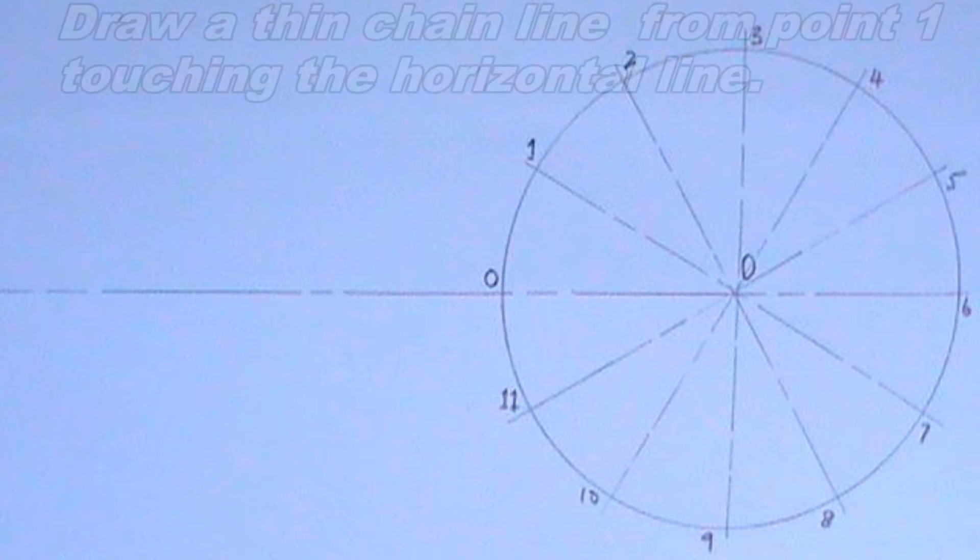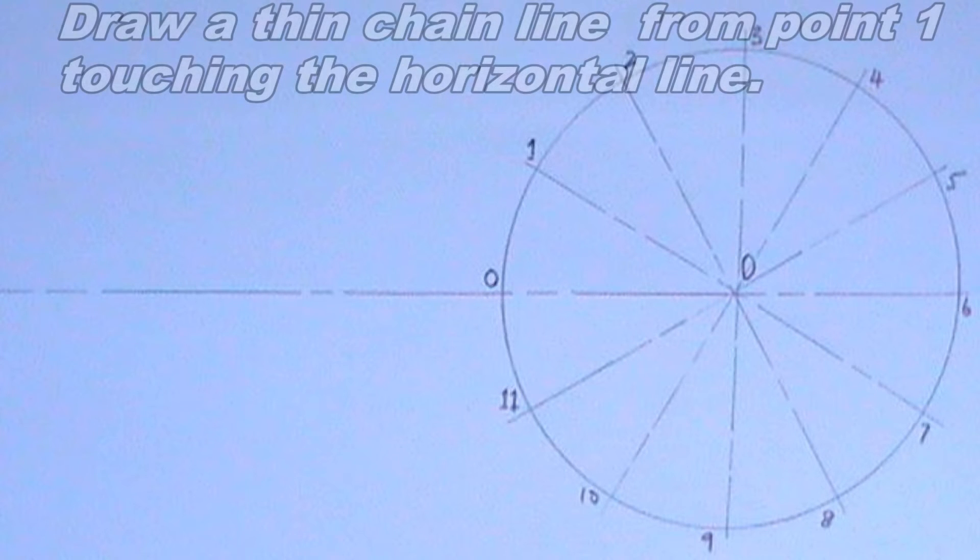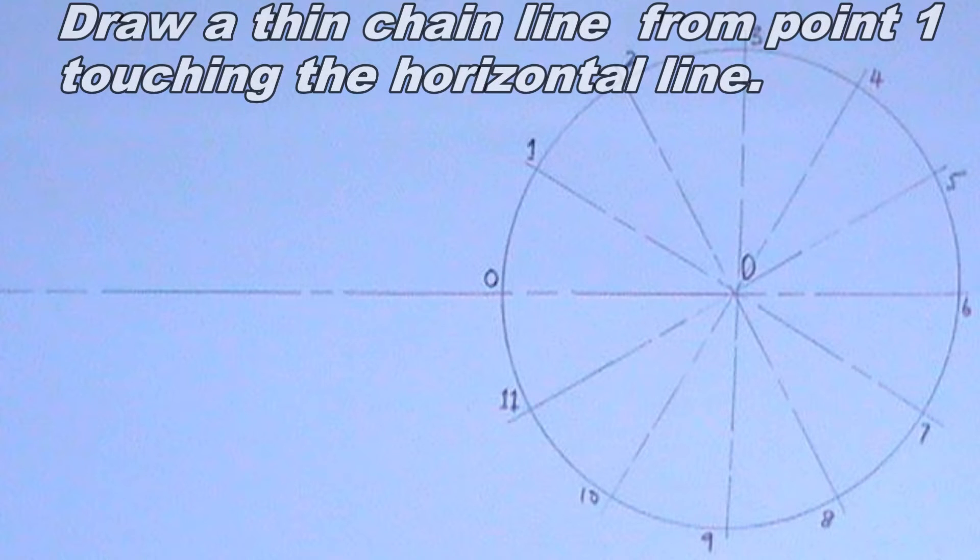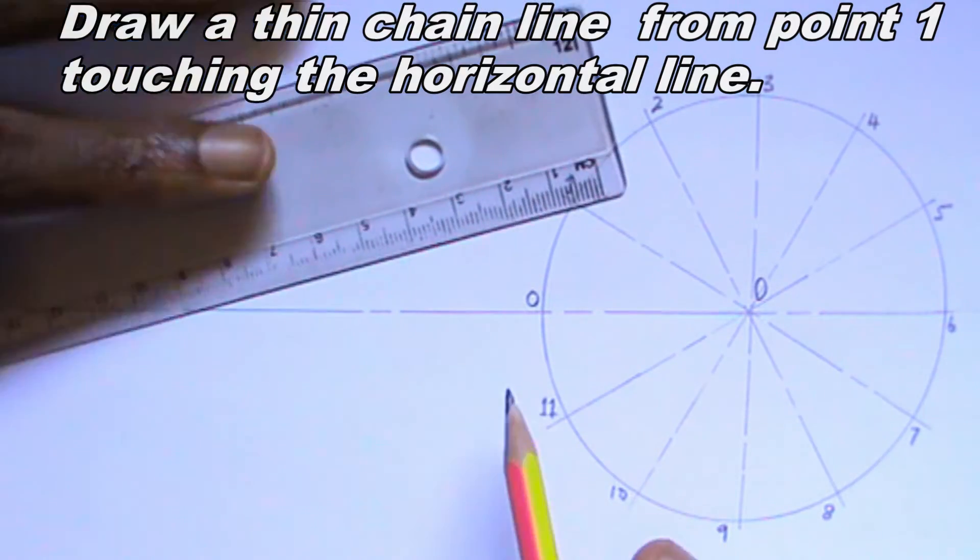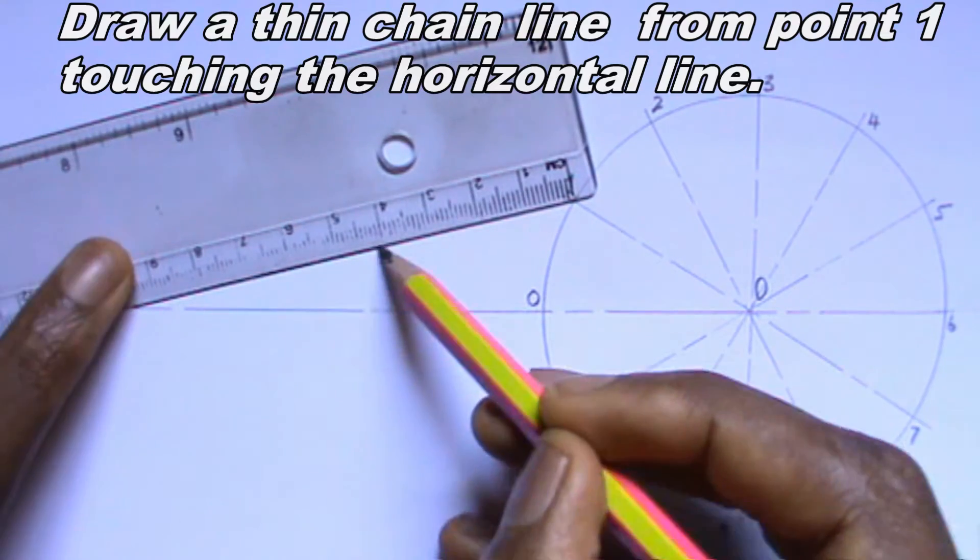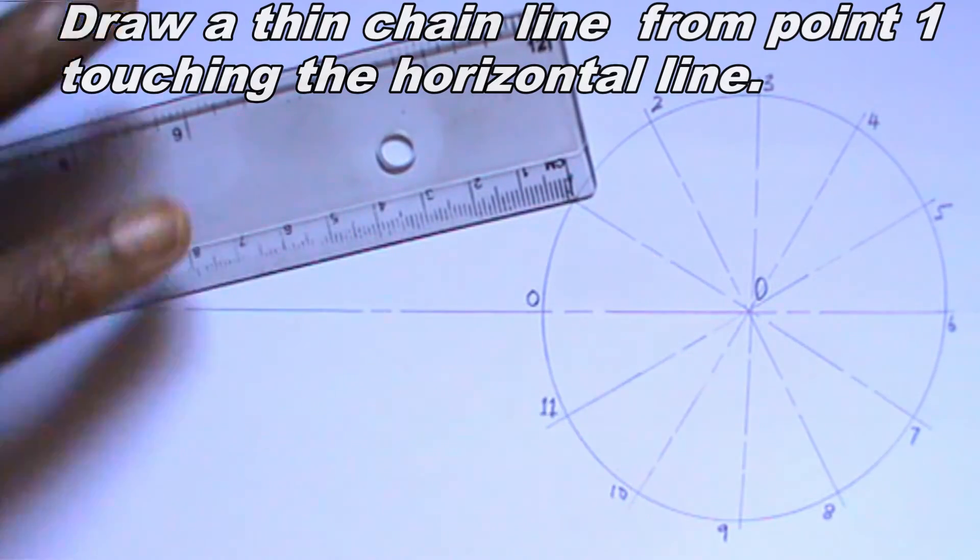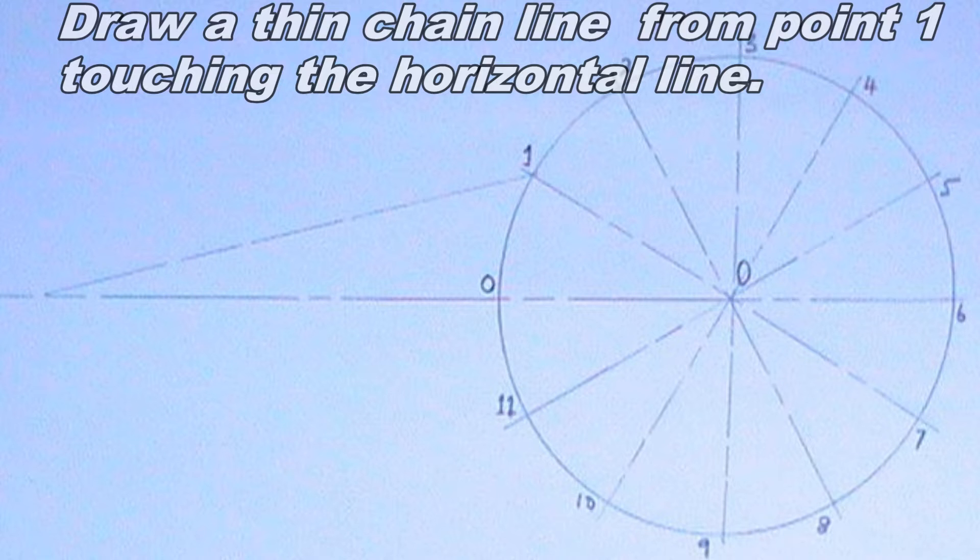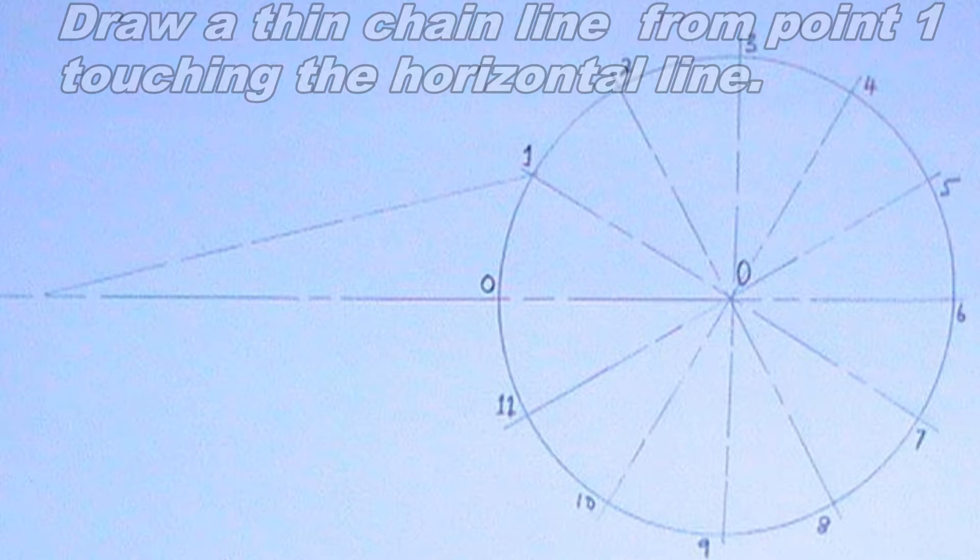The next step is to draw a line from point 1 touching the horizontal line.